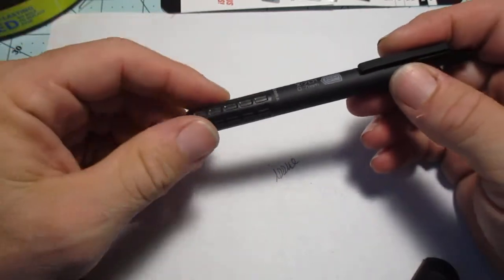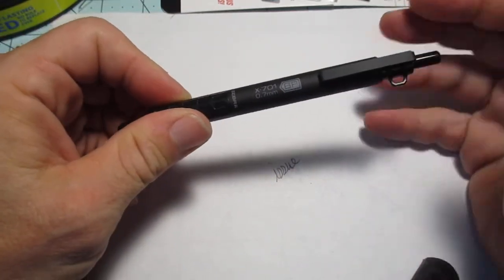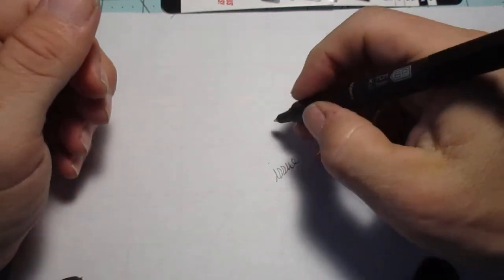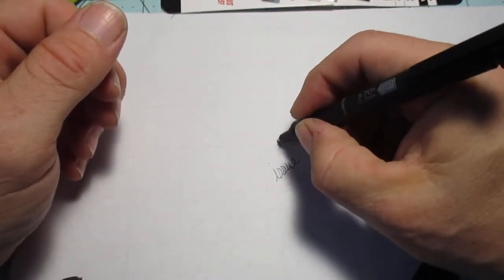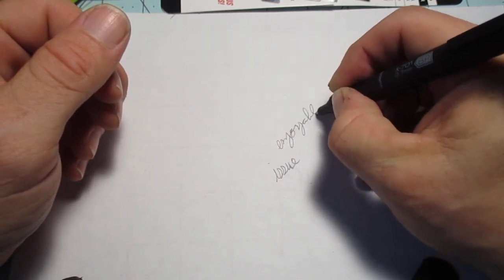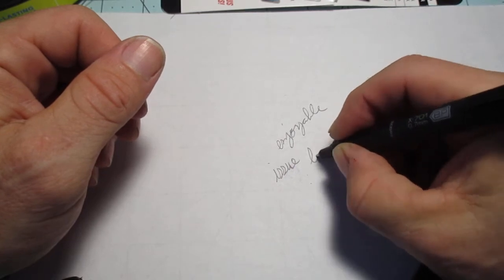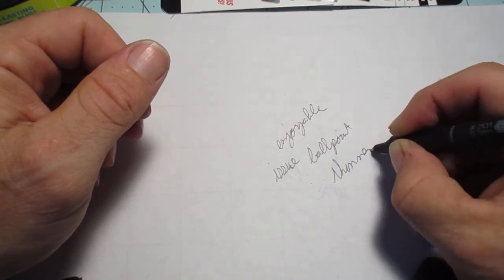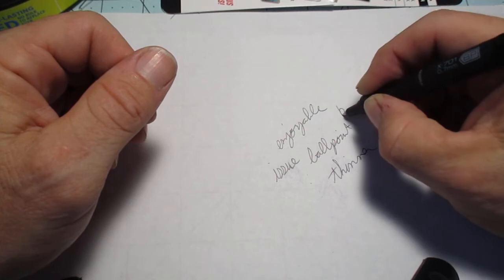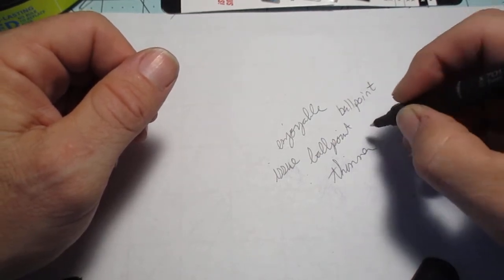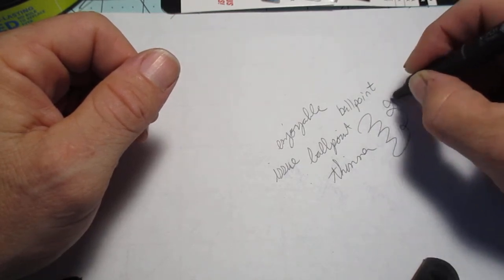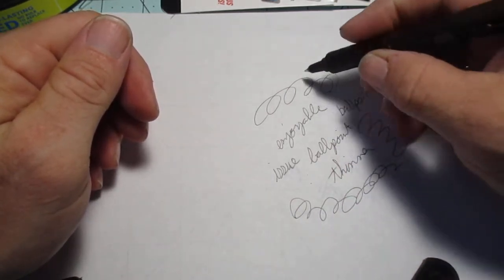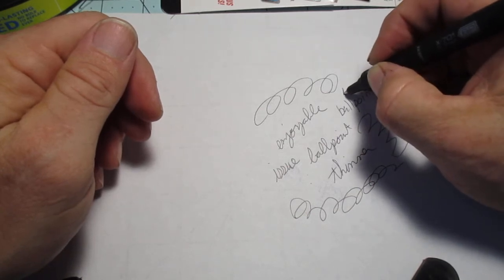But surprisingly enough, when I write with these tactical extreme pens, I don't have a very fun experience. This, on the other hand, I could see putting this in my pen bag. This was very enjoyable. Now, it is a 0.7, but of course, since it's ballpoint, the line is going to be much thinner. But that's the attributes of the ballpoint. But this is another example of how I prejudged something until I actually put my hands on it and used it. I like this pen. I really do like it.